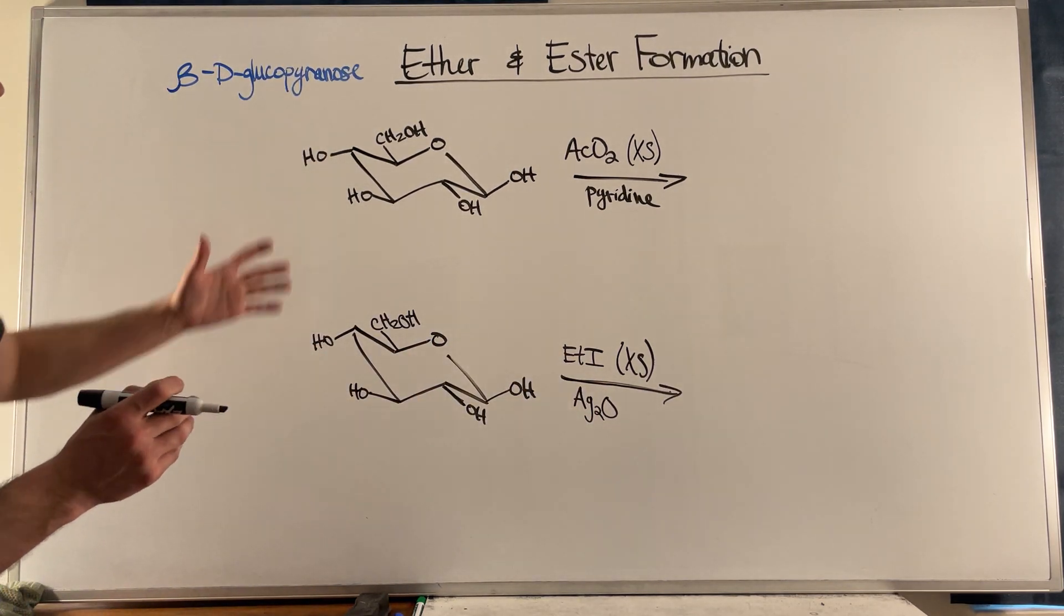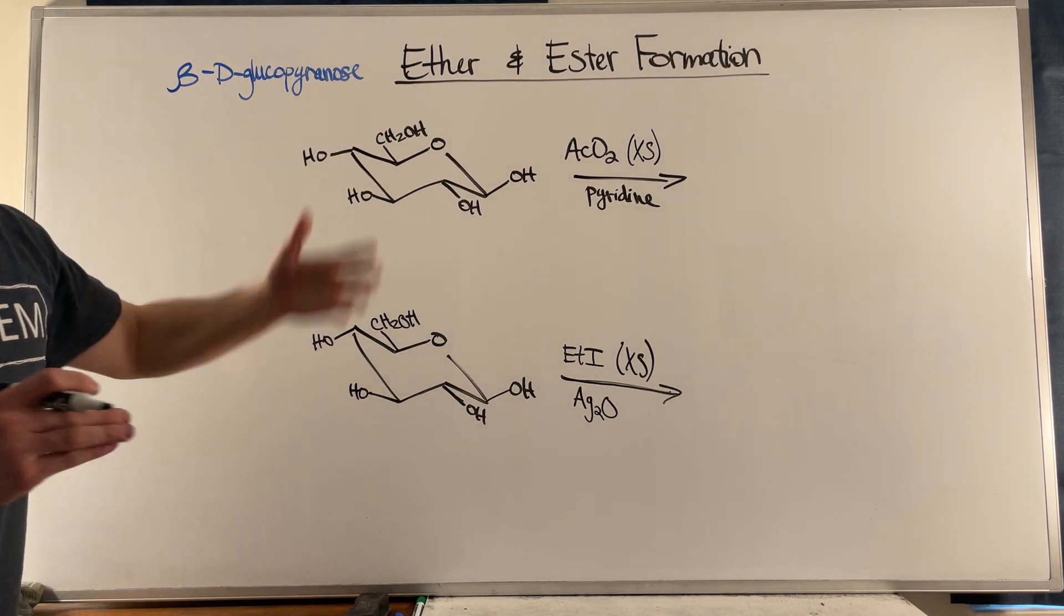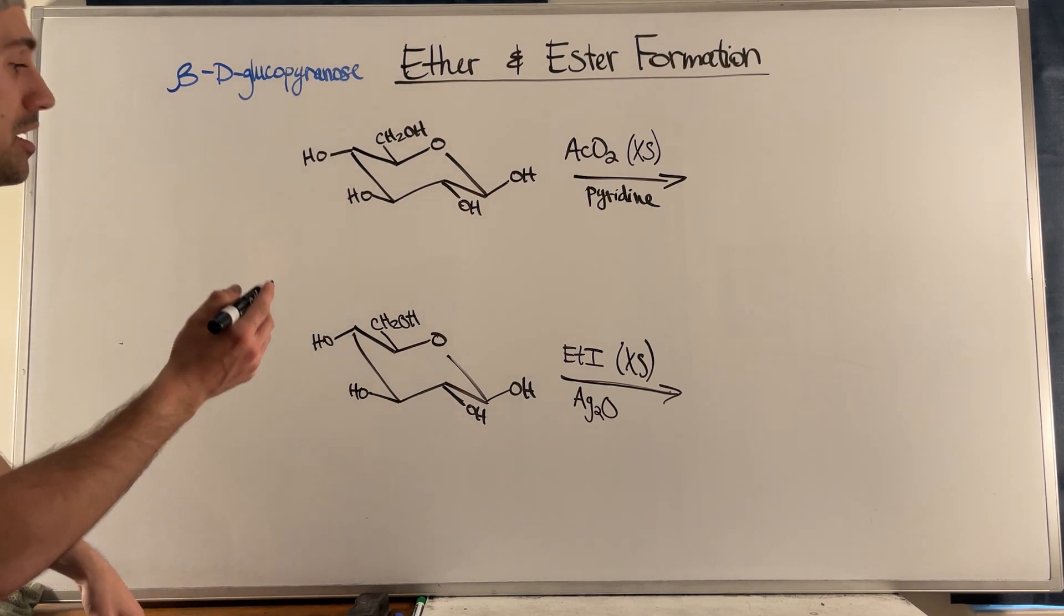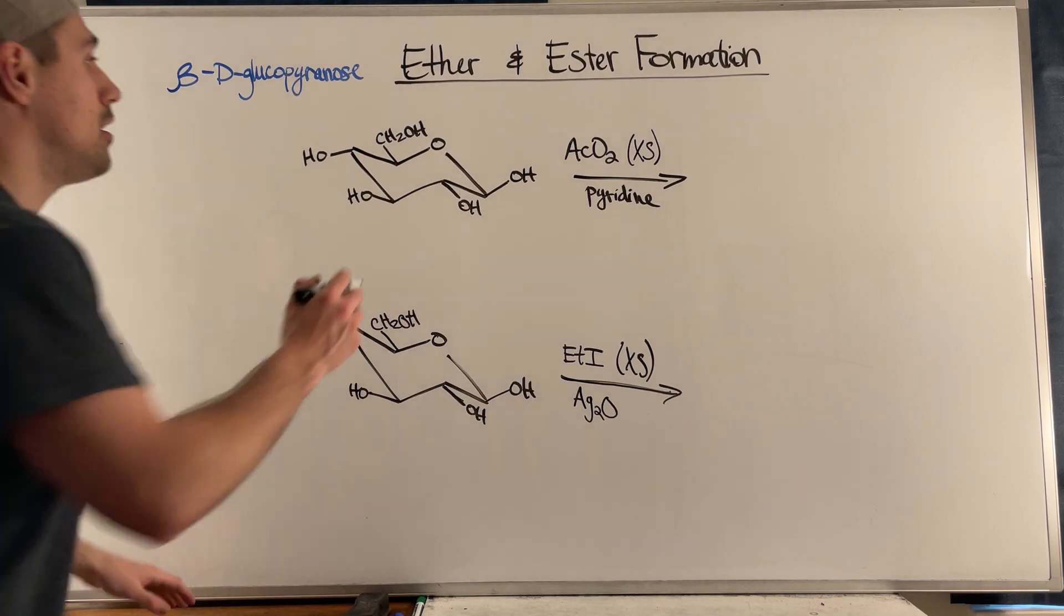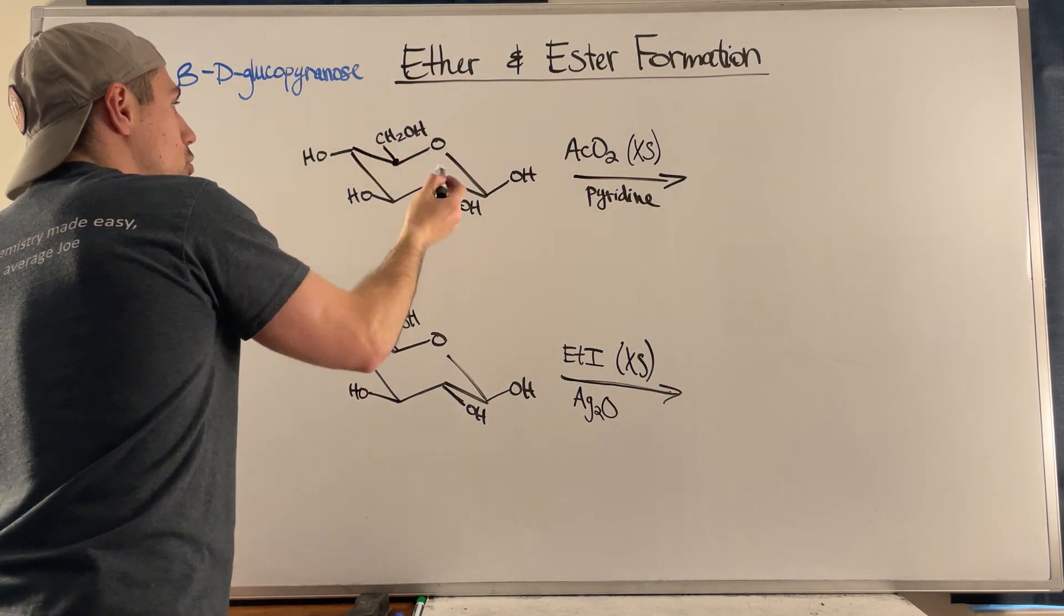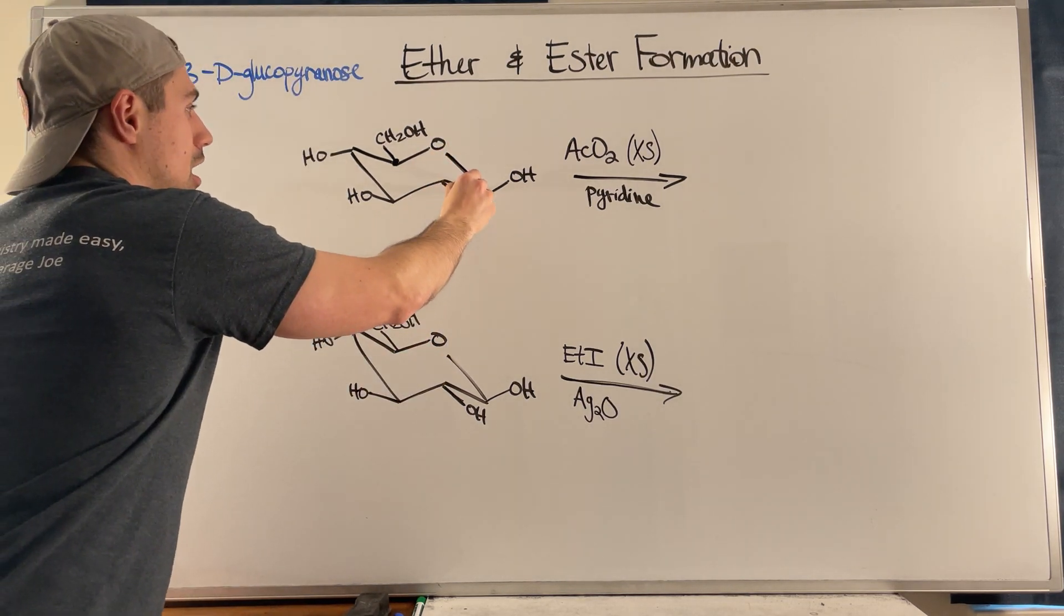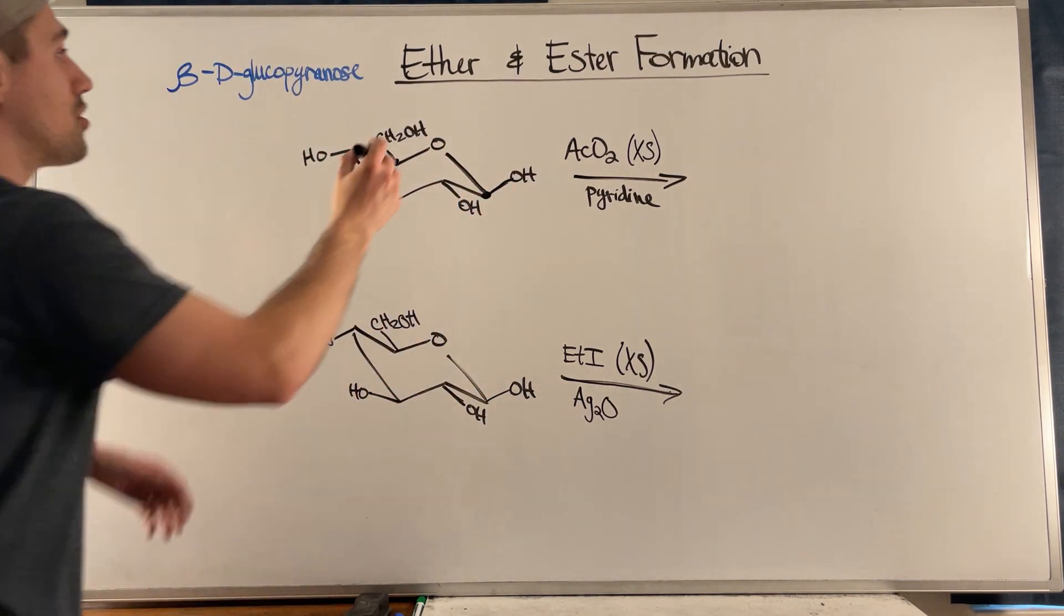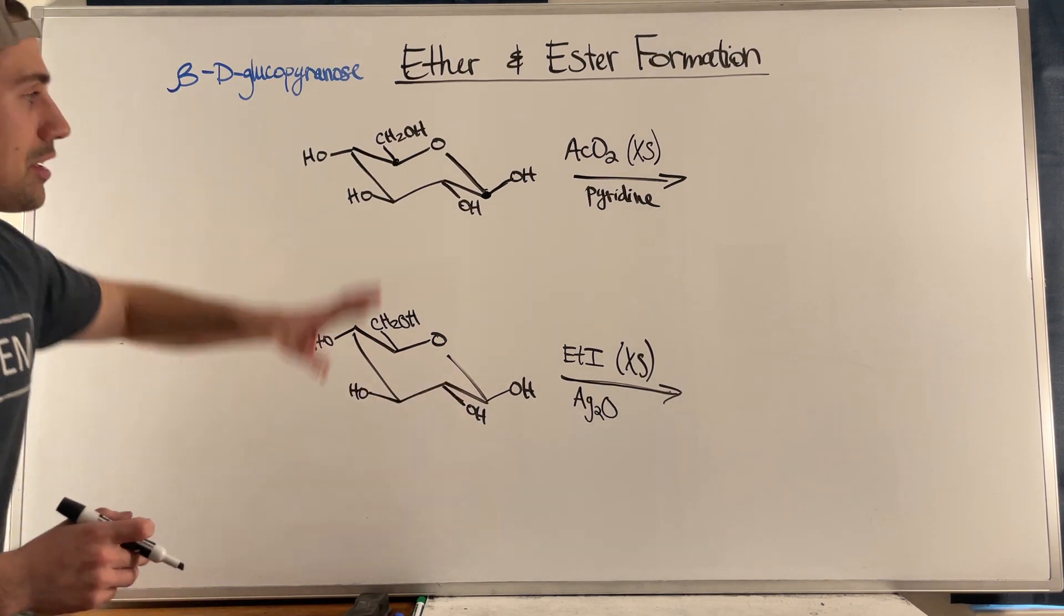So right, if we take a look here at beta-D-glucopyranose, one thing I want to point out before we even get started is this would be a beta anomer because if you look at this CH2OH, this is up equatorial, and if you look at the anomeric position which is next door to the oxygen embedded in the ring, we see it's up equatorial.